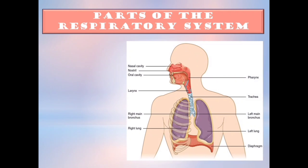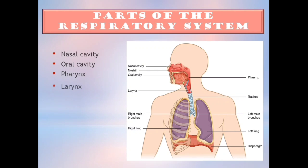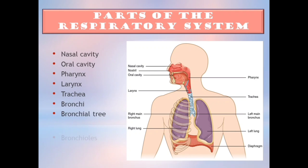Here are the parts of the respiratory system: nasal cavity, oral cavity, pharynx, larynx, trachea, bronchi, bronchial tree, bronchioles, lungs, and diaphragm.